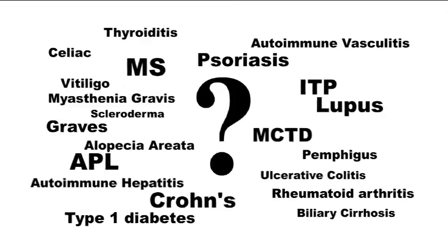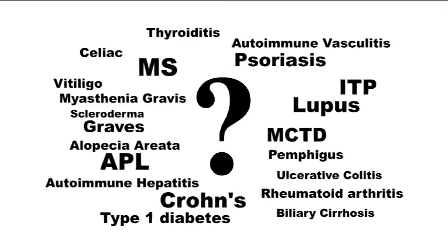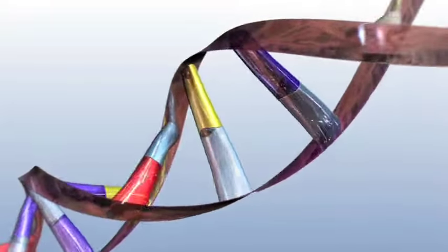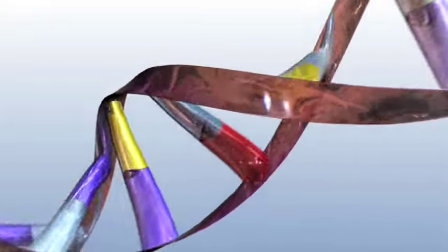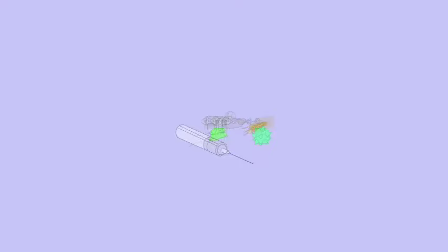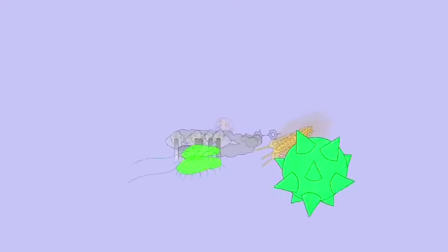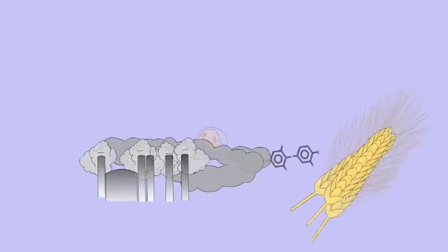Nobody is certain exactly why or how autoimmune disorders occur, but contributing factors include genetics and environmental conditions that can trigger the disorder. Some of the known environmental triggers include drugs, viruses, bacteria, foods, pollutants, hormones, and stress.